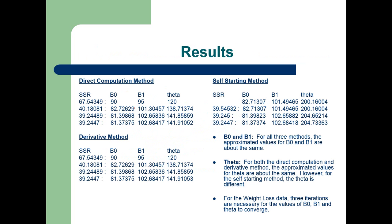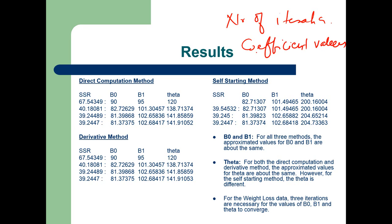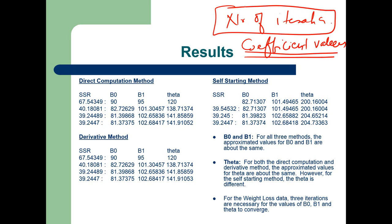At the end of the day, what matters is that the final values of beta 0, beta 1, and theta should ideally be the same across all three methods. What also matters is the number of iterations and the coefficient values. The coefficient values should ideally be the same in all methods; the number of iterations will differ. The method with fewer iterations should be preferred because it requires less computational power.